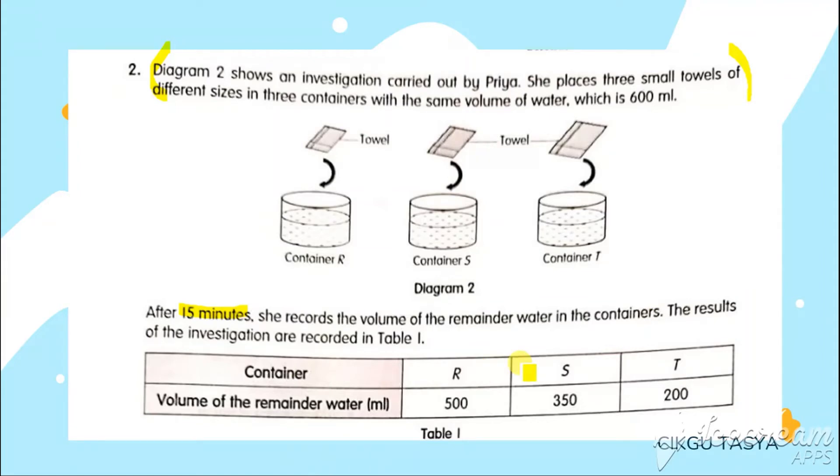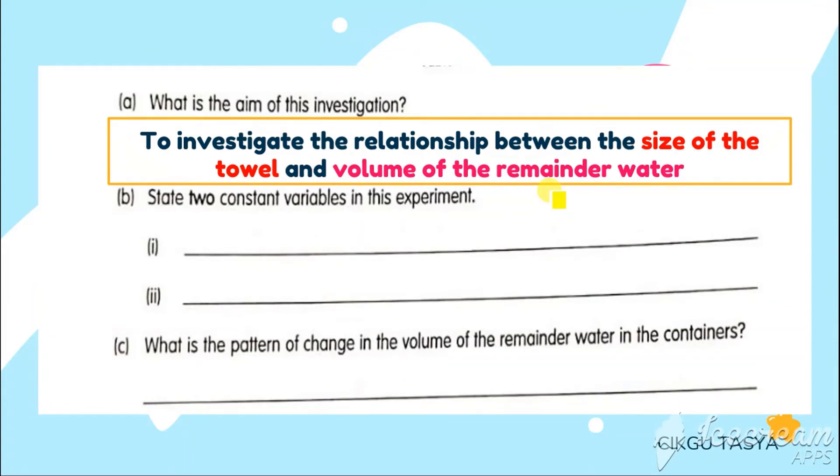First, you have to find for your manipulative variable, which is sizes. The towel size are different. And then the responding variable is the volume of the remainder water. For the aim, you have to put in your manipulative variable and responding variable. To investigate the relationship between the size of the towel and the volume of the remainder water. Whenever you want to write your aim, you always have to remember, the words in the blue color will be the same. The words that teacher highlighting now, it will be the same for every aim. Only the manipulative variable and responding variable will be the different one.